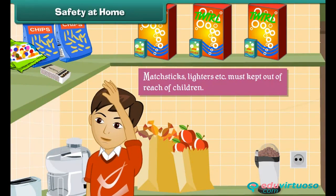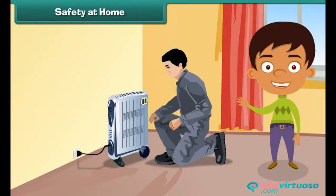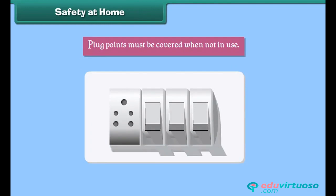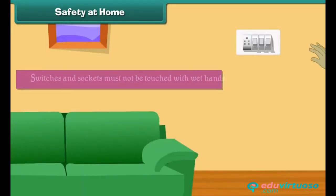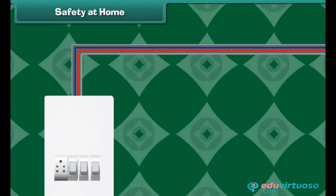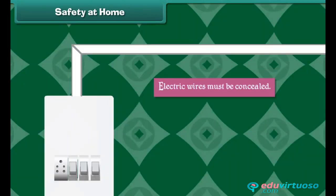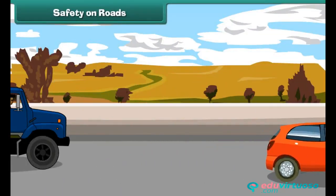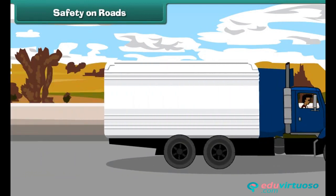Electricity is man's best friend, but careless use of electricity and electrical appliances can lead to fatal accidents. To avoid mishaps, plug points must be covered when not in use, switches and sockets must not be touched with wet hands, and electric wires must be concealed.